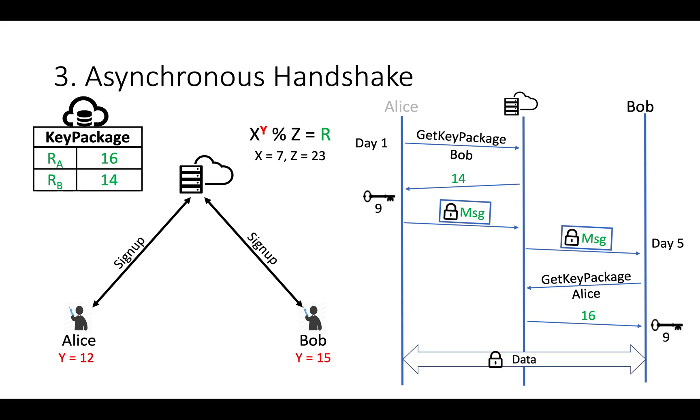This is how Alice and Bob can exchange key asynchronously. I hope you understand till this point. Let's understand this again.